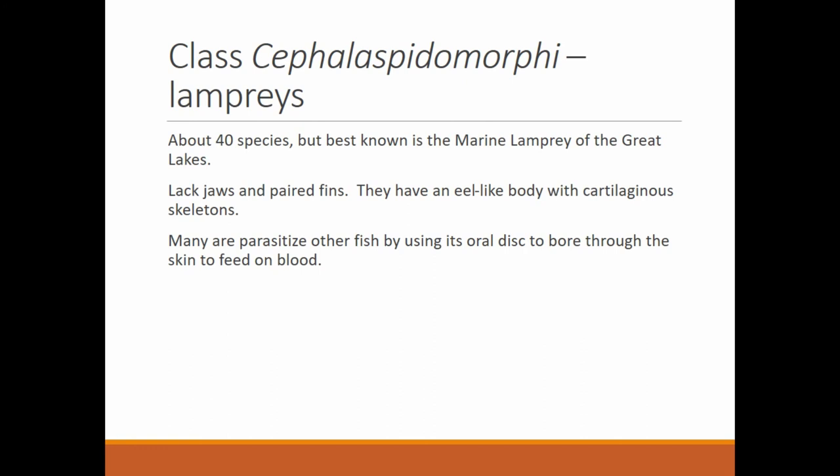Next is class Cephalaspidomorphi — quite a mouthful, go ahead and pause to practice saying it. There are about 40 species, best known as the marine lamprey of the Great Lakes. They lack jaws and paired fins — they just have a long body with a fin running along the spine and belly, no pectoral or pelvic fins. They also have a cartilaginous skeleton. Many parasitize other fish by using the oral disk to bore through the skin and feed on blood, as seen in that large oral sucker with its rings of teeth.